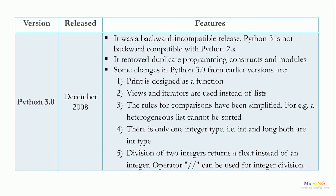The rules for comparisons have been simplified. For example, a heterogeneous list cannot be sorted — a list should consist of similar data types to perform sorting or other operations. Additionally, there is only one integer type: int and long are both considered as int. In previous versions, big numbers were considered as long type. Finally, division of two integers returns a float instead of an integer value; if an integer result is required, use the integer division operator, which is the double forward slash symbol.